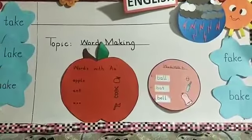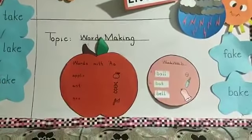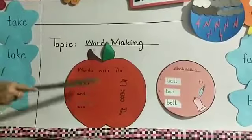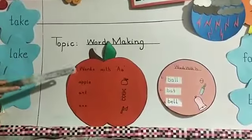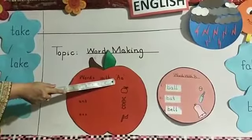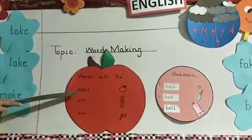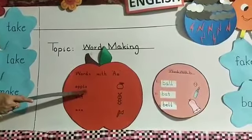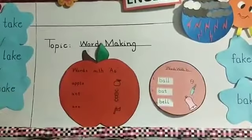What is this? This is an apple. The starting letter of apple is A. What is the spelling of apple? A-P-P-L-E, Apple.